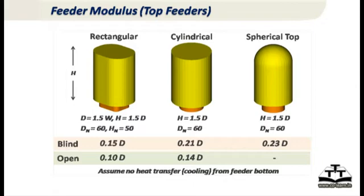You already know how to calculate the modulus of the casting by breaking it into sections. As long as feeder modulus is more than casting modulus, the first rule — that the hot spot should be in the feeder — is satisfied. With similar dimensions, H/D = 1.5, for a cylindrical feeder the equation gives 0.21 times the diameter, which means the modulus of a cylindrical feeder is more than a rectangular feeder. If you go to a spherical top, it is even more — up to 0.23 times the diameter.